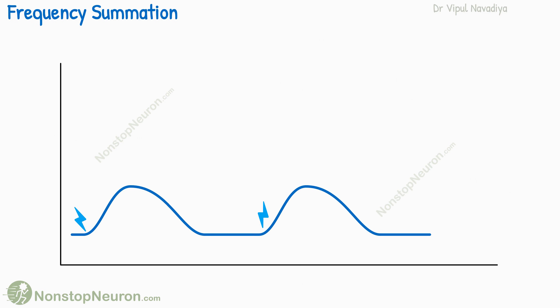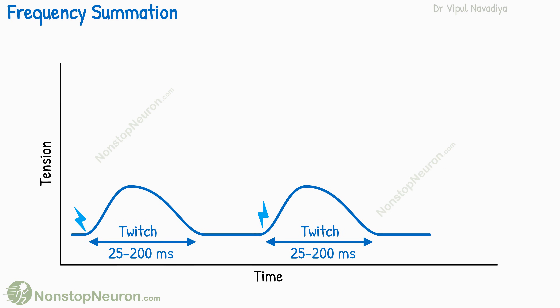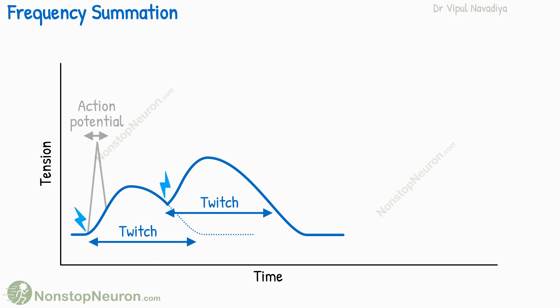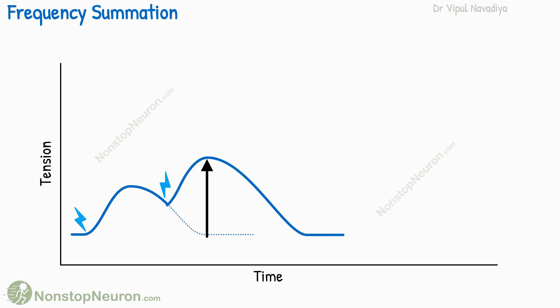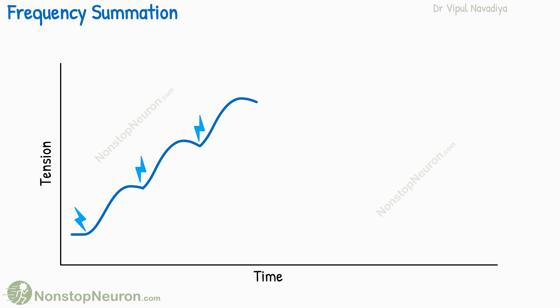First, frequency summation. This graph shows time on the x-axis, tension developed by a muscle fiber on the y-axis, and these are individual twitches. An individual twitch lasts for 25 to 200 milliseconds. This duration is long compared to the action potential that stimulates the fiber. So it's possible to stimulate the fiber again before the first twitch is over. If we do so, the second twitch is added to the first twitch, so the total tension generated by a fiber increases. As we keep increasing the frequency of stimulation, the tension generated by the fiber increases.